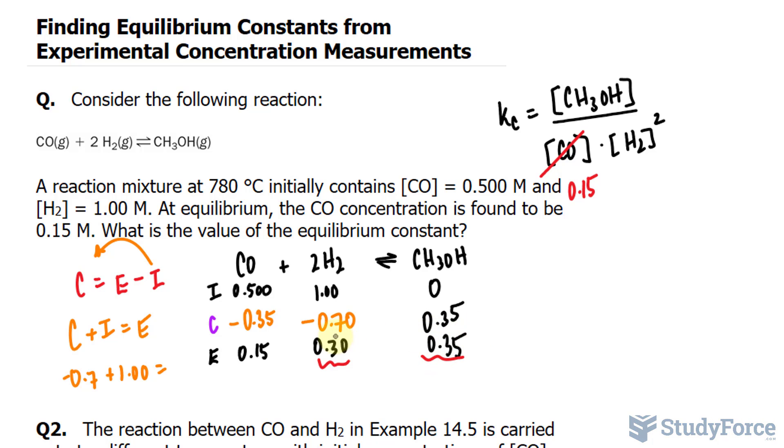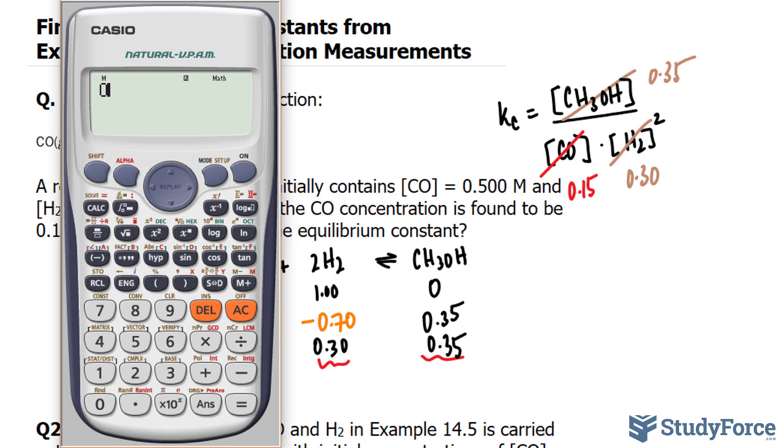So I can now substitute into here 0.3 raised to the power of 2, and into here 0.35. Using our calculator, start off at the top. 0.35 divided by...